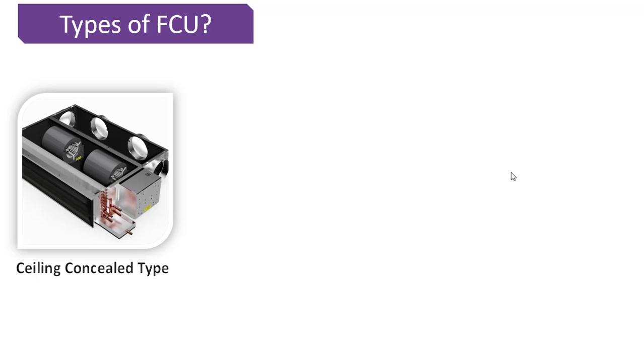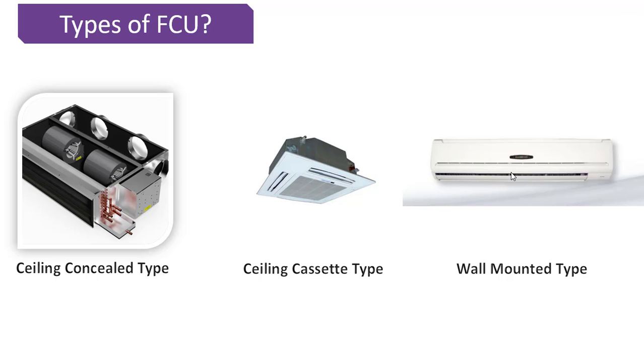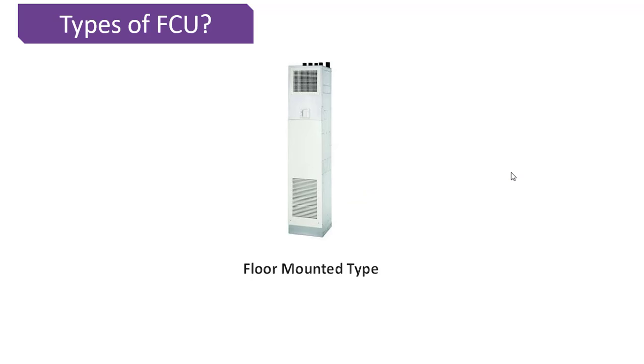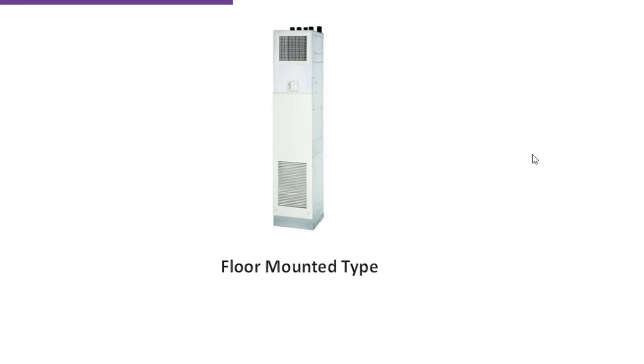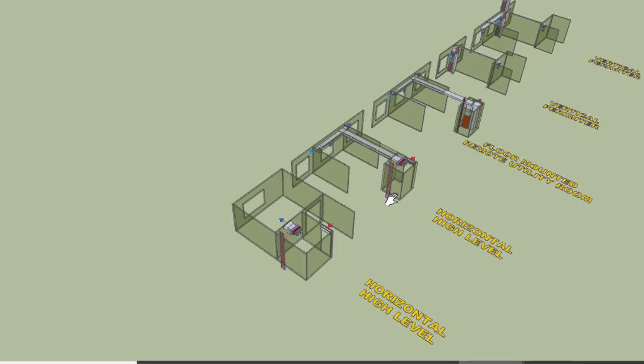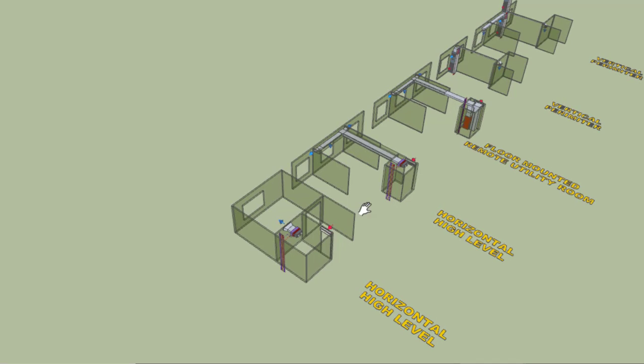First type is a ceiling concealed type FCU which is installed above the false ceiling and then we have ceiling cassette type FCUs. There are also wall mounted type FCUs same like the split units which we have installed in our homes and then there is a floor mounted type FCU. Now let's have a look at installation of different FCUs inside a building.